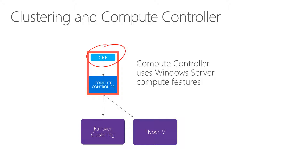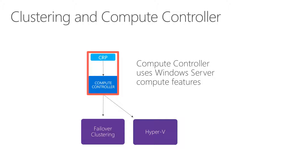Here is another example. We can see at the top the compute resource provider — triggered by something where you used ARM, for example executed an ARM template. It uses the compute resource provider. The compute resource provider uses the compute controller, which is the underlying microservice. And the compute controller translates these commands into Hyper-V or failover clustering commands.